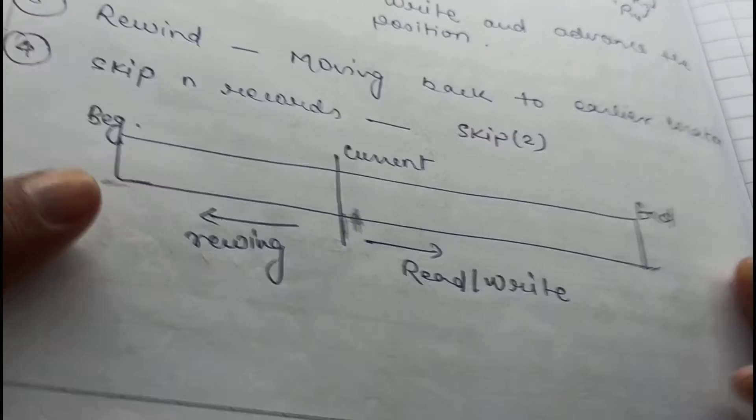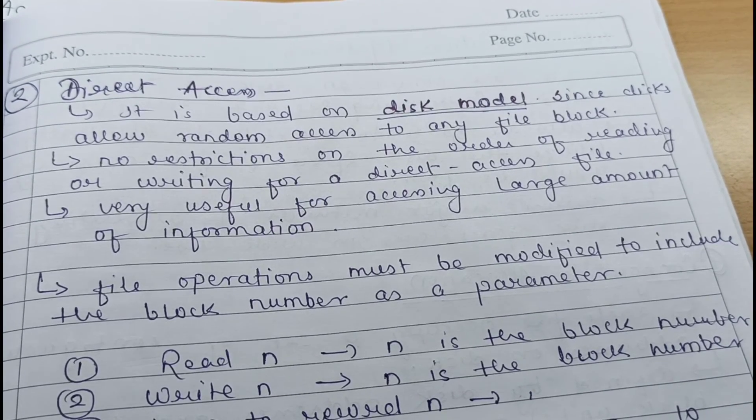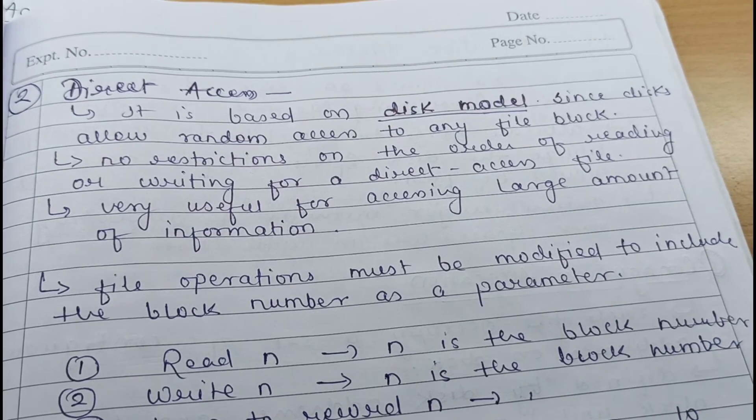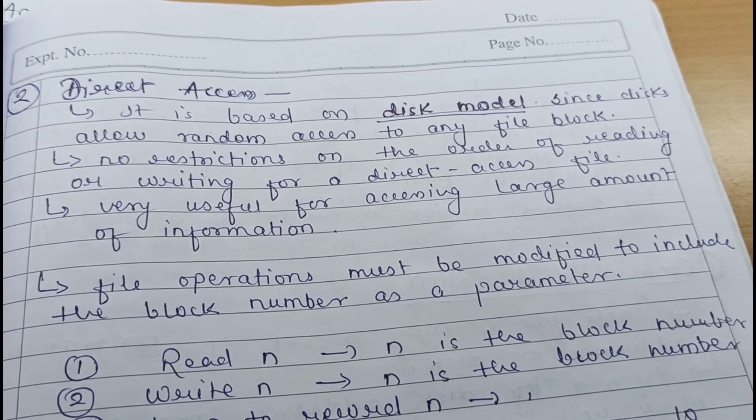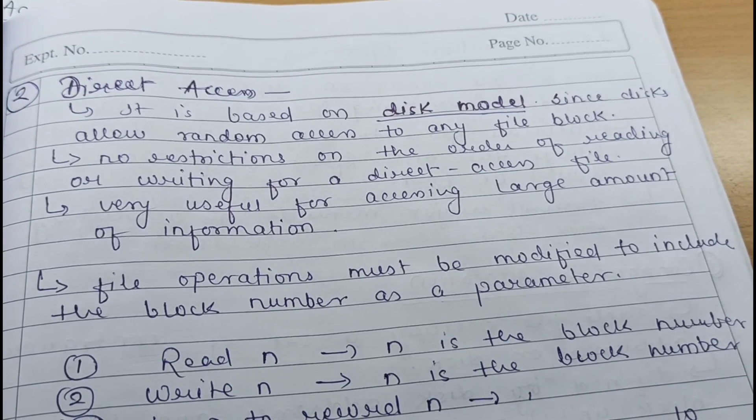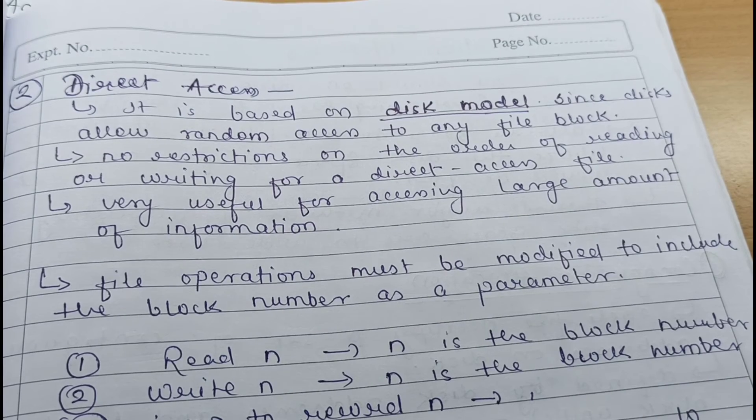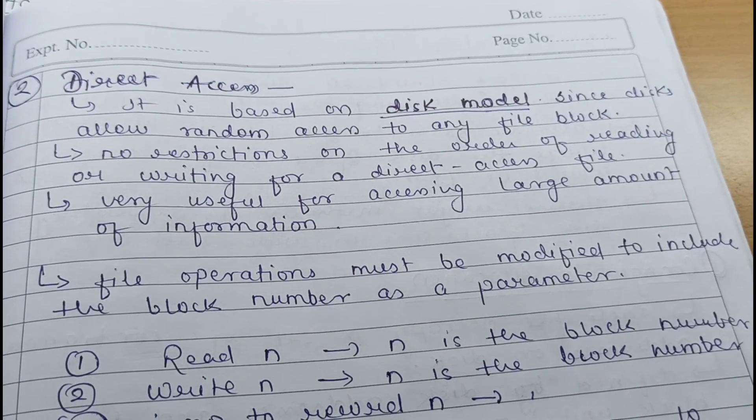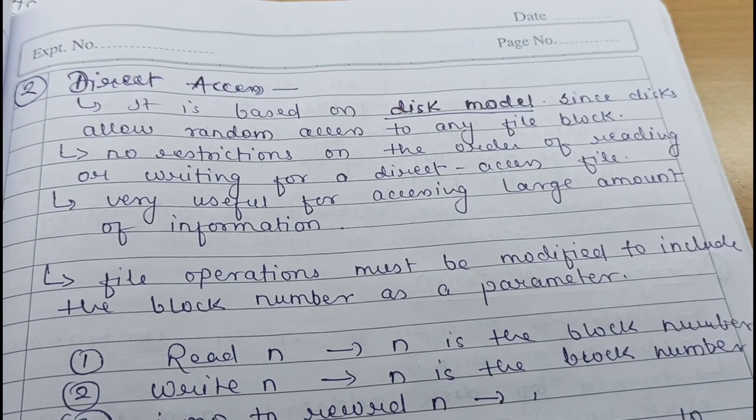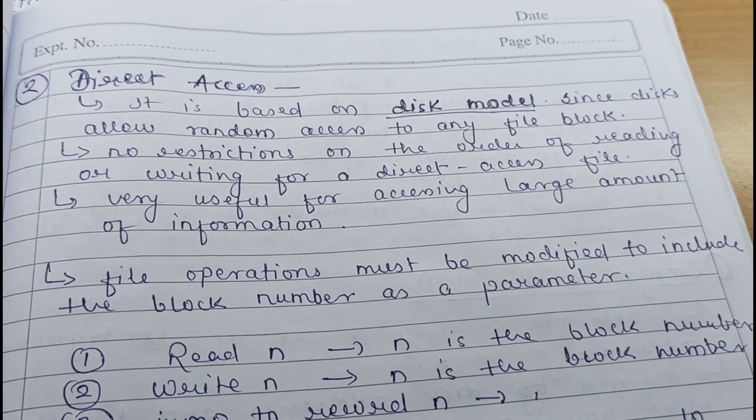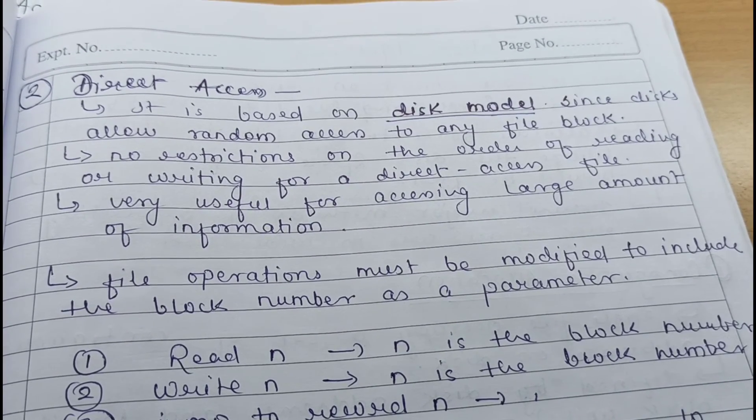After sequential access, the second access method is direct access. Direct access method is mainly based on the disk model. Since disk allows random access to any file block - how do we store the data in the disk? In a block. So there is no restriction on the order of reading or writing for direct access. In sequential access we are going to read, there must be an order, one after another. But here there is no order.